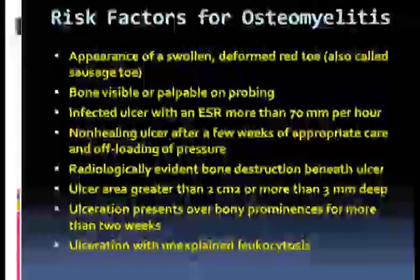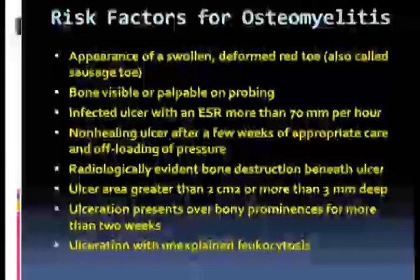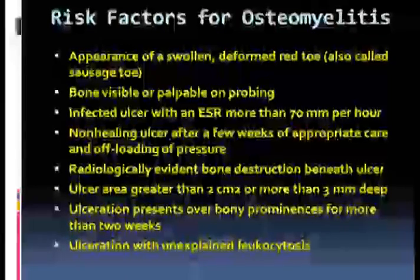Which patients are more prone to develop osteomyelitis in diabetic foot infection? Risk factors include: appearance of a swollen, deformed, red 'sausage toe'; visible or palpable bone on probing; infected ulcer with an ESR greater than 70 mm/hour; non-healing ulcer after weeks of appropriate care and pressure offloading; radiologically evident bone destruction beneath an ulcer; ulcer area greater than 2 cm² or more than 3 mm deep; ulceration over bony prominences for more than 2 weeks; and ulceration with unexplained leukocytosis.